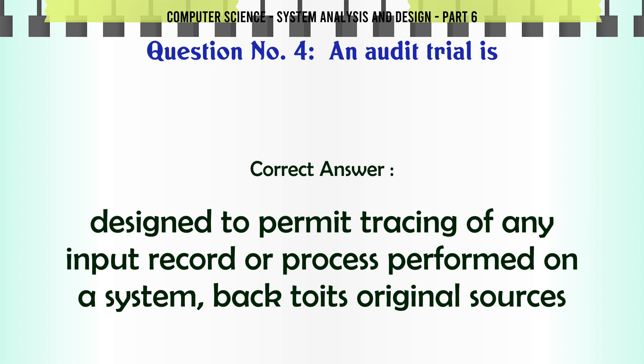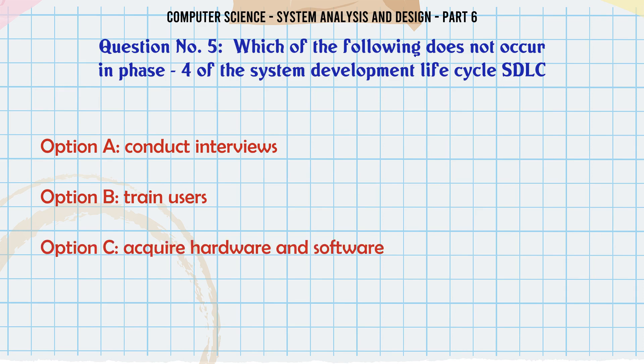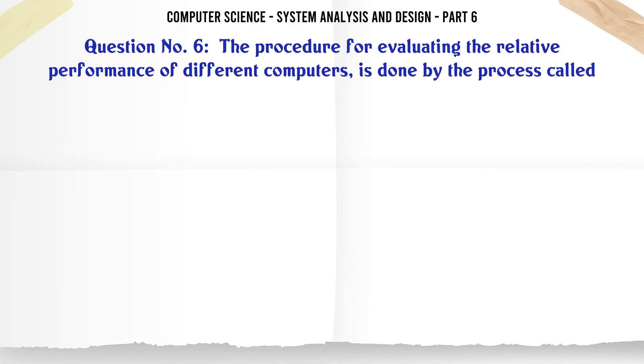Which of the following does not occur in Phase 4 of the System Development Life Cycle? A. Conduct interviews, B. Train users, C. Acquire hardware and software, D. Test the new system. The correct answer is: Conduct interviews.